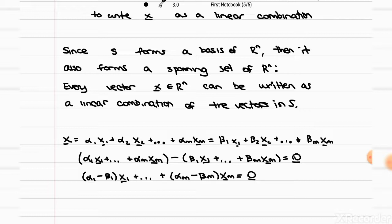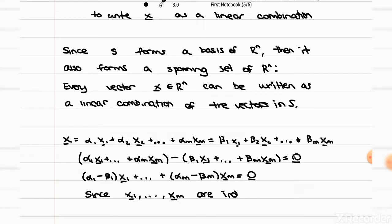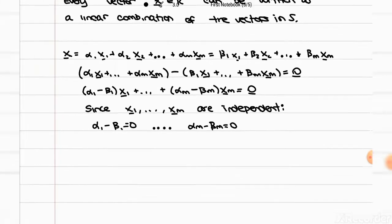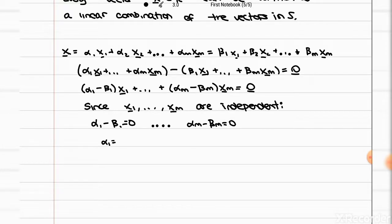Since we know that the vectors in S form a basis — specifically, not just a spanning set — we know that the vectors are independent. Using the definition of independence, the only way these vectors satisfy this equation is for all the coefficients to be zero, which means alpha 1 minus beta 1 has to equal zero, and so on. If we isolate either alpha or beta, we get that alpha 1 has to equal beta 1, and so on. In the end, these coefficients have to be exactly the same, which confirms that the linear combination is unique.